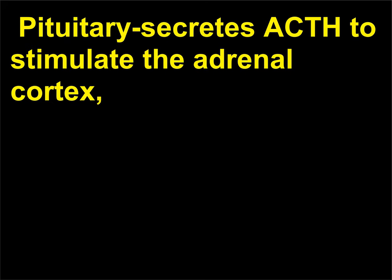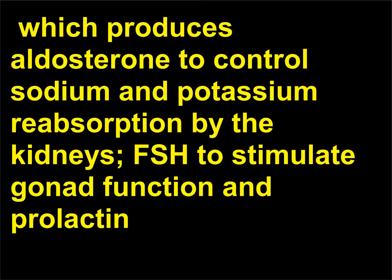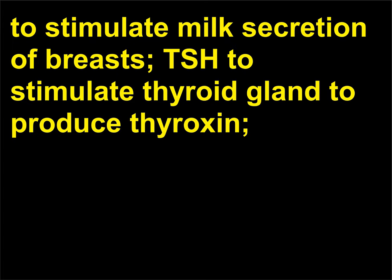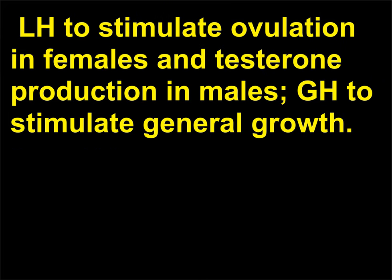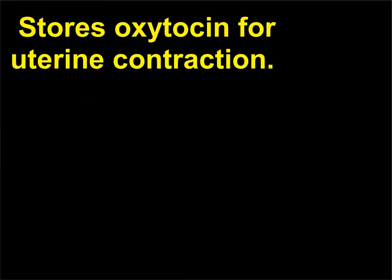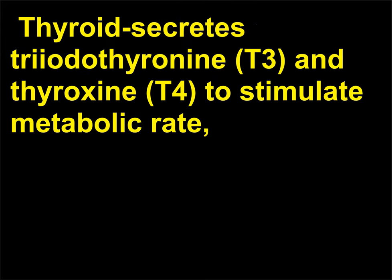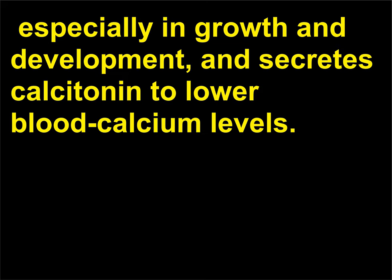The pituitary secretes ACTH to stimulate the adrenal cortex, which produces aldosterone to control sodium and potassium reabsorption by the kidneys; FSH to stimulate gonad function; prolactin to stimulate milk secretion of breasts; TSH to stimulate the thyroid gland to produce thyroxin; LH to stimulate ovulation in females and testosterone production in males; and GH to stimulate general growth. It also stores oxytocin for uterine contraction. The thyroid secretes triiodothyronine (T3) and thyroxine (T4) to stimulate metabolic rate, especially in growth and development, and secretes calcitonin to lower blood calcium levels.